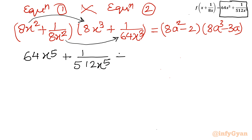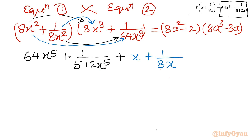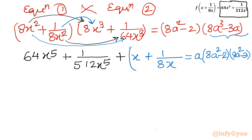Now let's see what extra terms come out from the cross multiplication. Multiplying 1/8x² by 8x³ gives x, and multiplying 8x² by 1/64x³ gives 1/8x. On the right-hand side, we can see a is common, so I can write a times (8a² − 2) times (8a² − 3).